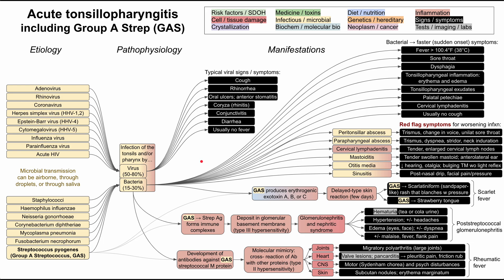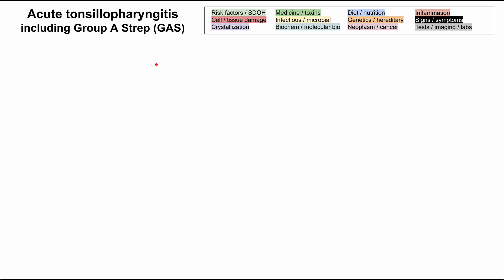This is a mechanism of disease map for acute tonsillopharyngitis. This flowchart includes group A strep infections as well as some of the complications of group A strep infections. As in all of these flowcharts, each box is color-coded according to the legend in the top right. I'll be going through the etiologies, the manifestations, and the pathophysiology of acute tonsillopharyngitis. Let's clear out all the boxes and get started.